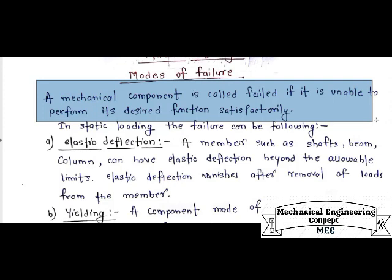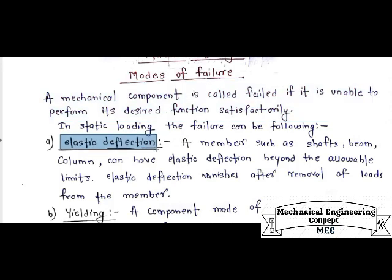The first type is elastic deformation. As we know from the stress-strain diagram, a member such as a shaft, beam, or column can have elastic deformation. This is the deformation that occurs beyond the allowable limit, where the elastic deflection vanishes after the removal of load from the member. Whenever load is applied within the limit of elasticity and then removed, the component returns — this is elastic deformation failure.